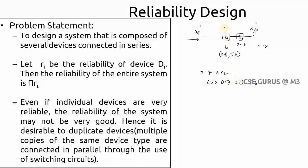If we take two devices of the same type, each with reliability 0.9, the system reliability becomes 0.81. Even if individual devices are very reliable, the reliability of the system in series may not be very good — this is a key observation.